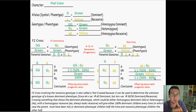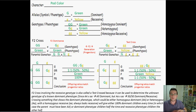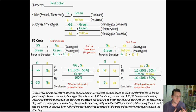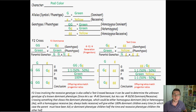Notice the difference between the test cross and the F2 dominance cross: in the test cross, two phenotypes show up, but in the F2 dominance cross, only one phenotype shows up. This is called a test cross because you can use it to discover the unknown genotype of a known dominant phenotype.